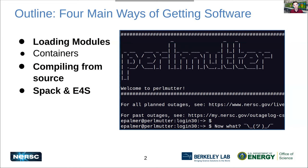One is loading modules, which consists of pre-installed software by our staff. Another is containers, which won't be part of my talk but will show up in the following talk. Third is compiling code from source — that's what you do when you git clone and have to compile it yourself. The other one is package managers through SPACK and E4S. I'll follow that same order: talking about modules, then compiling code, then SPACK and E4S.